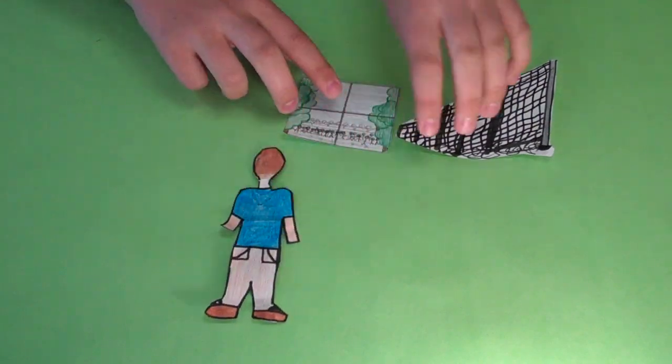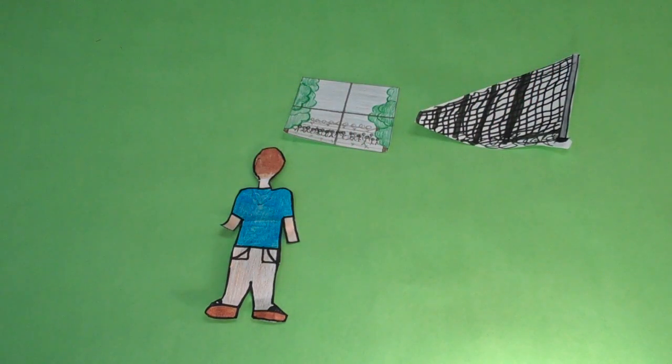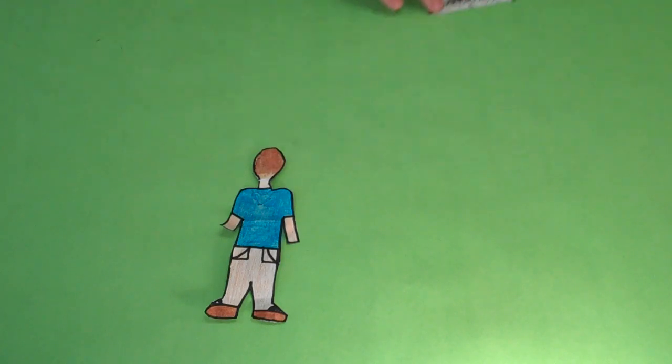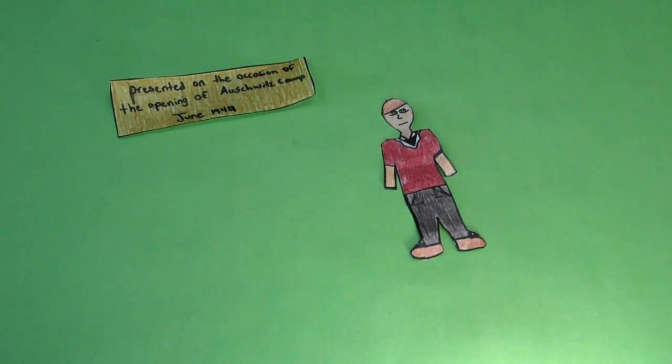Bruno observes all the people on the other side of the fence that are wearing striped pajamas and striped caps. Bruno reads the plaque on the bench that says, presented on the occasion of Outwith camp, June 1944.